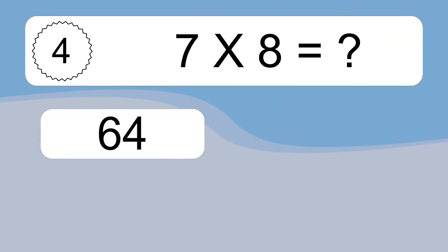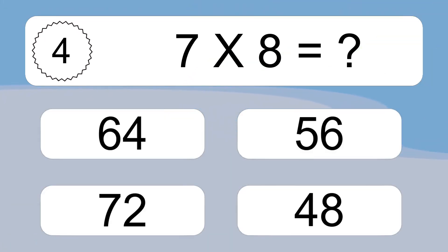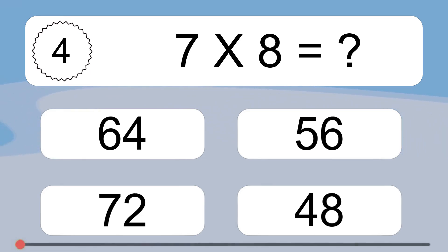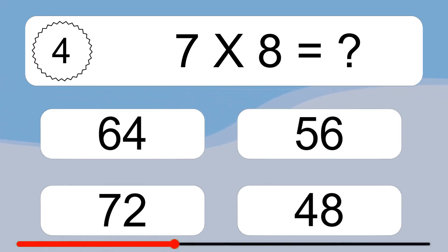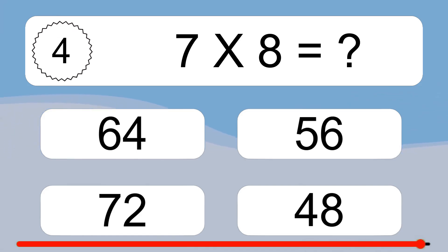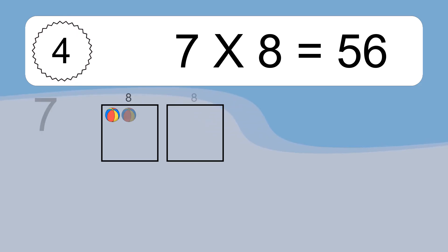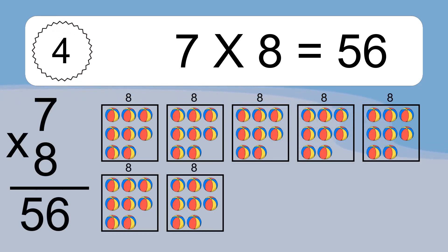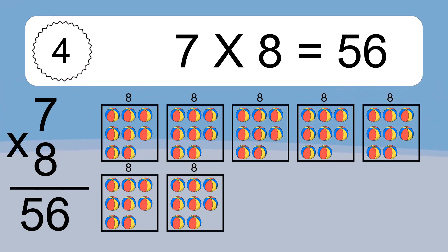7 times 8 equals what? We have 7 boxes, and each box has 8 colorful balls inside. If you count all the balls in all the boxes together, you will have 7 times 8 balls. This equals 56 balls.